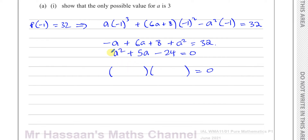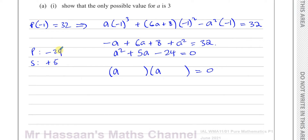We need to find two numbers that multiply to give negative 24 and add to give plus 5. Since the squared term has a coefficient of 1, we know it splits as (a + ?)(a + ?). The two numbers are 8 and −3: 8 times −3 is −24, and 8 plus −3 is +5. So it factorizes as (a + 8)(a − 3).